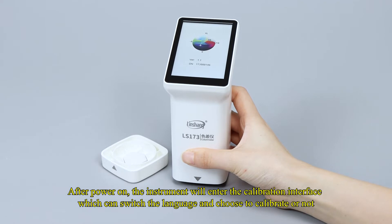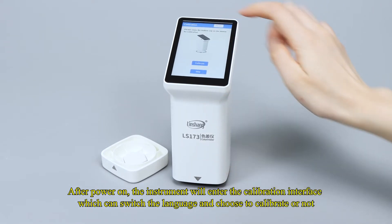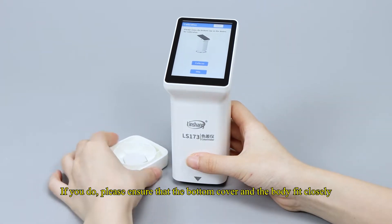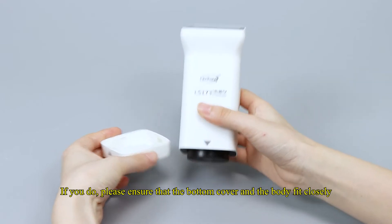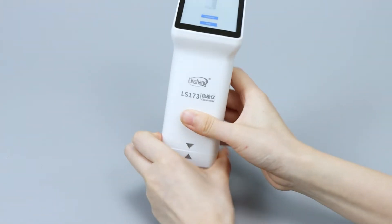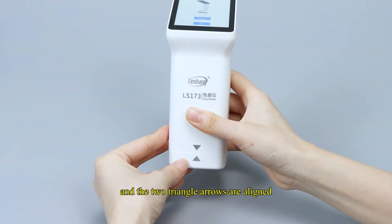After power on, the instrument will enter the calibration interface which can switch the language and choose to calibrate or not. If you do, please ensure that the bottom cover and the body fit closely and the two triangle arrows are aligned.